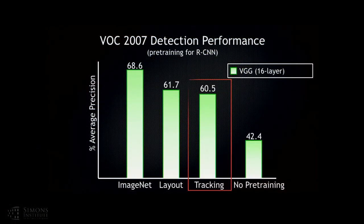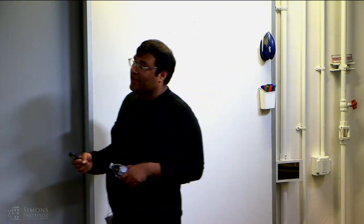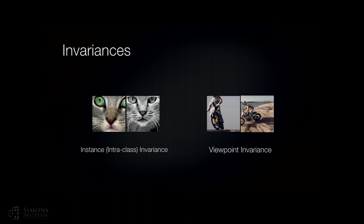On the performance chart for VOC 2007 fine-tuning: when learning just viewpoint invariances, we get 60.5%, which is slightly less than the 61.7% from the layout approach. However, the invariances learned are completely different — one learns instance invariance, the other learns viewpoint invariance. For recognition, we want both invariances, not just one.